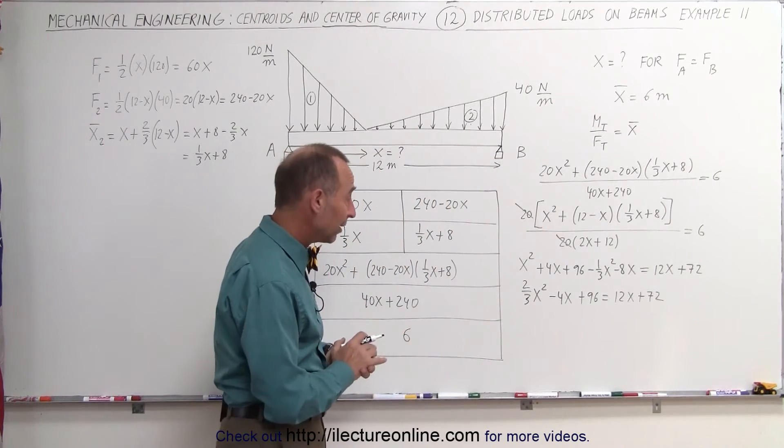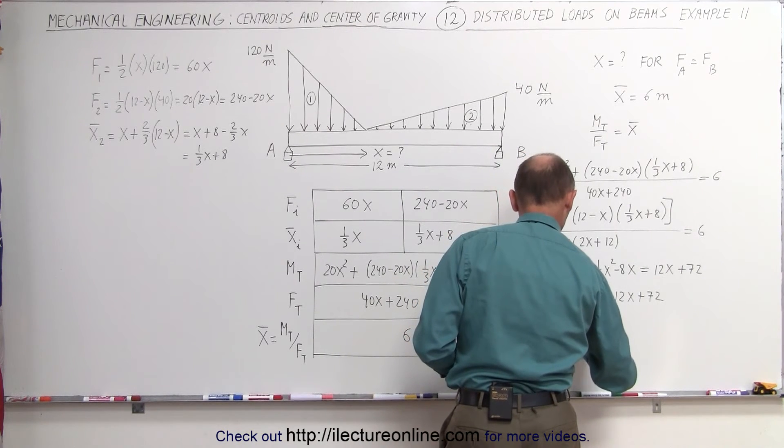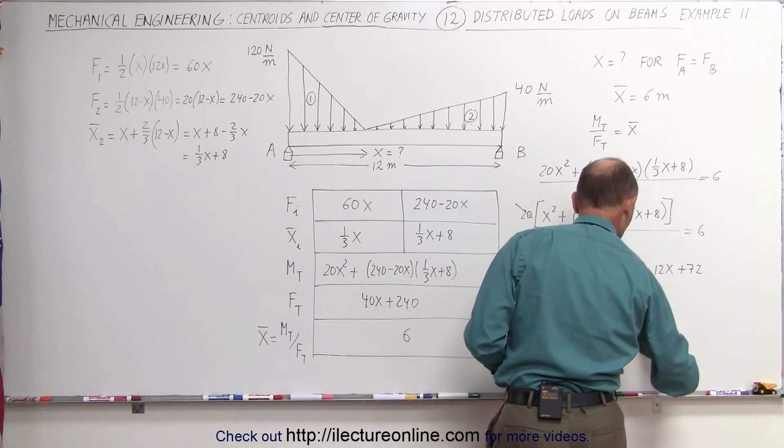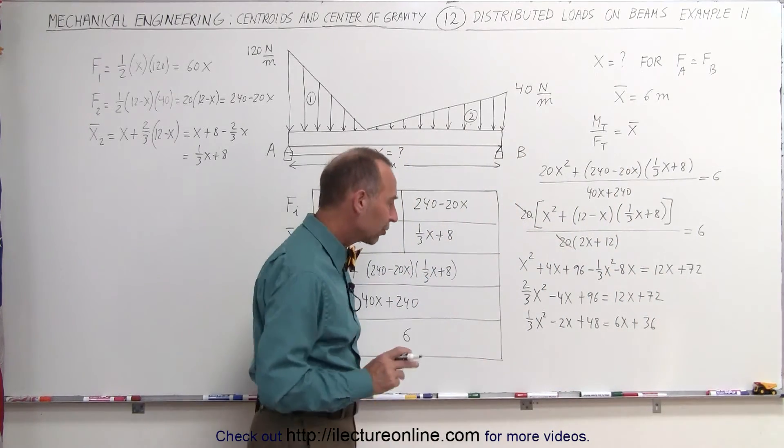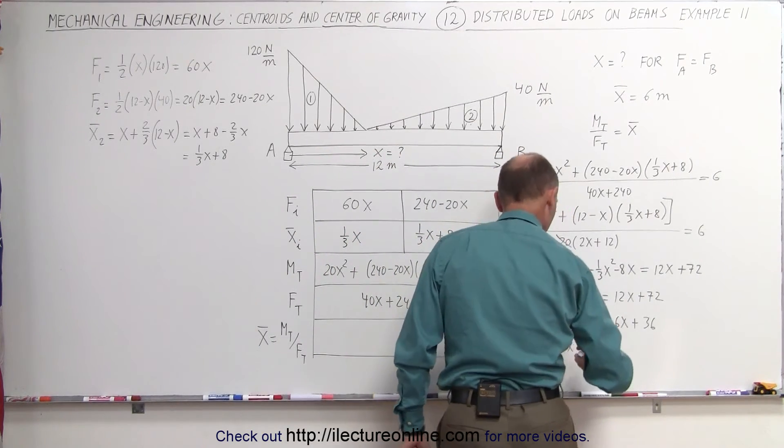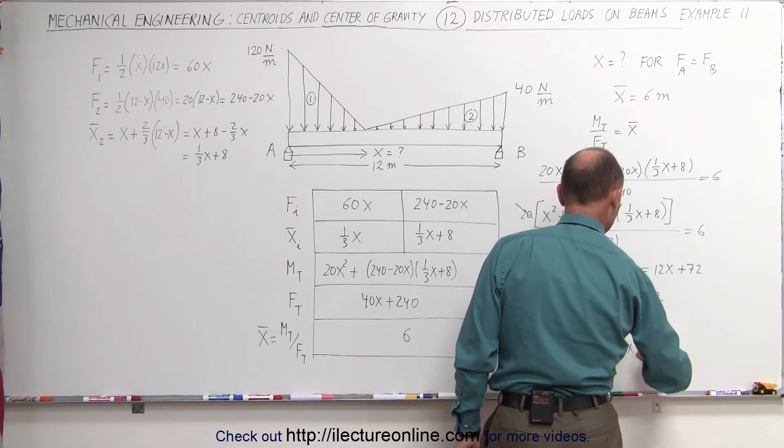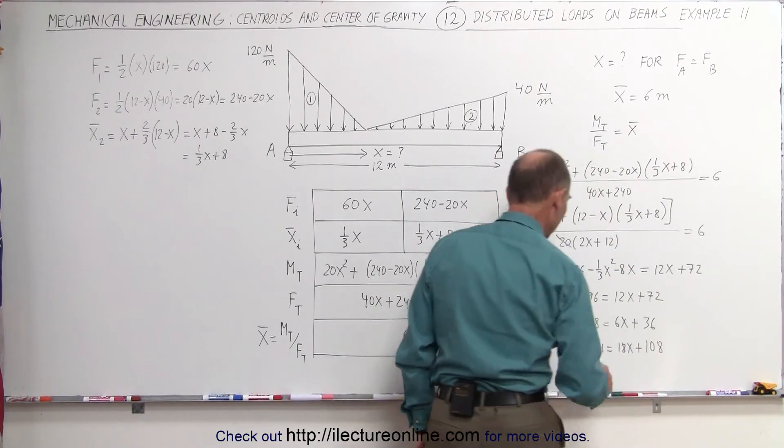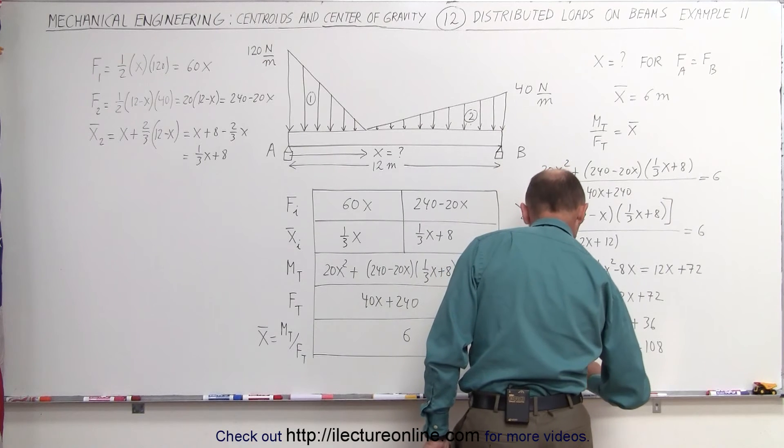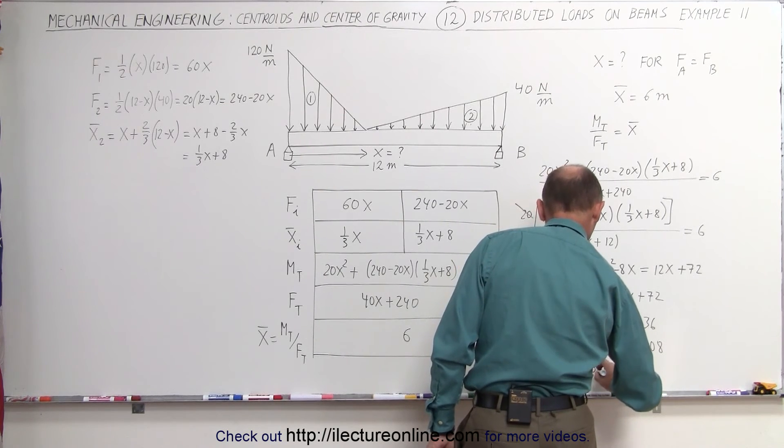Next, it looks like we could divide both sides by 2, simplify things a little bit more, we get one-third x squared, minus 2x, plus 48, equals 6x, plus half of 72, 36. Finally, I want to get rid of the one-third x squared, multiply everything by 3, we get x squared, minus 6x, plus 144, equals 18x, plus 3 times this, that would be 108. And now combining everything over to one side, we end up with x squared, minus 6, minus 18, that would be minus 24x, and 144 minus 108, that looks like plus 36, equals 0.